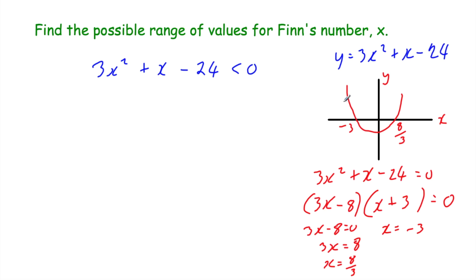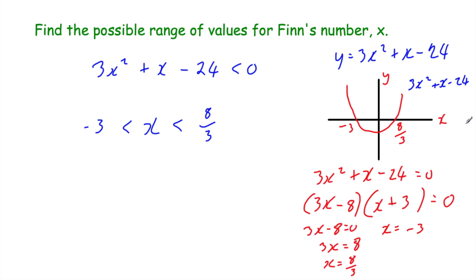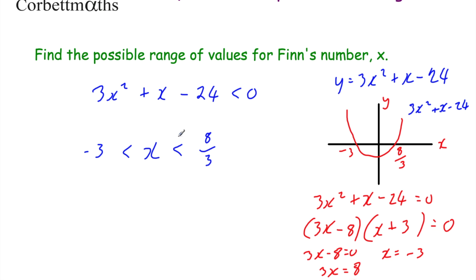We want to find when 3x squared plus x minus 24 is less than 0 — in other words when the quadratic is below the x-axis. It's below the x-axis for any x between negative 3 and 8 thirds. For instance, substituting 0 gives negative 24. So x must be greater than negative 3 but less than 8 thirds. However, since Finn's number is positive, x must be greater than 0 but less than 8 thirds, approximately 2.667.